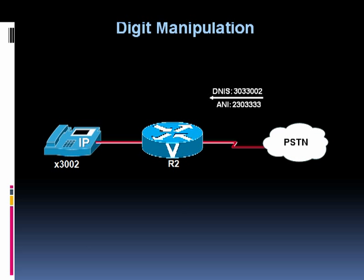It's probably okay to leave the ANI as it is and let that number appear on the internal phone. But when the DNIS — that seven-digit dial string — hits router R2, we probably need to strip off the 303, because we're only using four-digit dialing internally. After we do that, that's going to give us a DNIS of 3002, which is going to allow the router to route the call to the internal phone. When calling out from 3002, we might dial a 9 to get an outside line and then 230-3333, but our ANI at this point is only four digits: 3002. When we send that out to the PSTN, the caller looks at their phone — what are they going to think if their caller ID is only four digits?